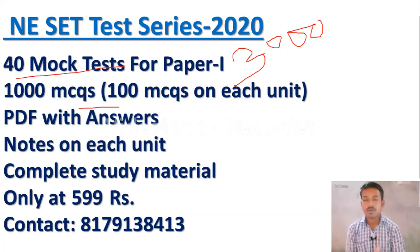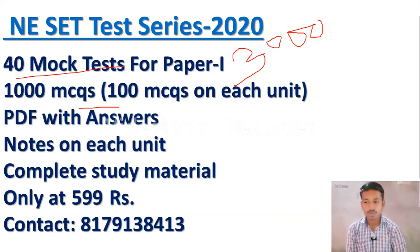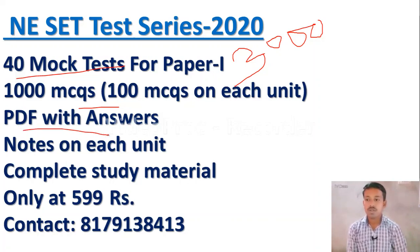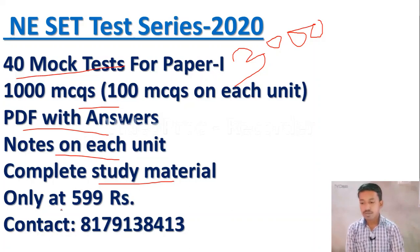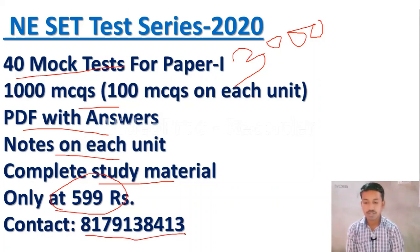If you solve all these 3000 MCQs, you can score more than 70 in your Paper 1, so you can focus more on your Paper 2. You can also download PDF with answers — all the mock tests and 1000 MCQs. We are providing notes on each unit and a complete e-book with study material including notes and MCQs. This is available only at Rs. 599. To join these tests, you can contact this number: 81791 38413, displayed on your screen.